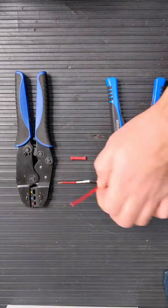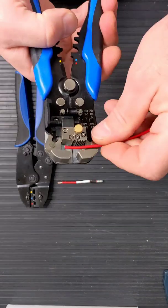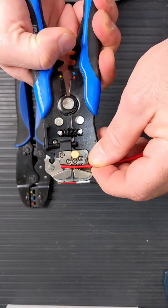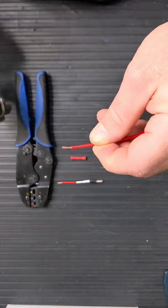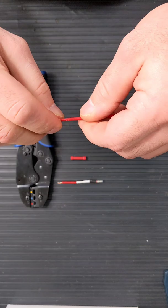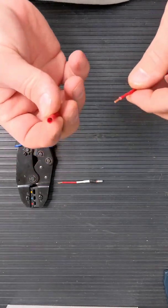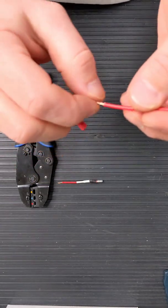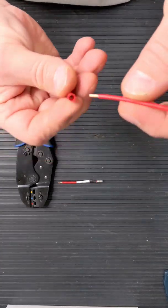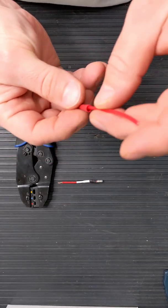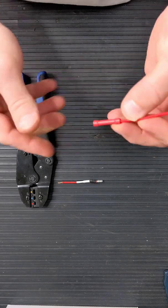You want to use your wire strippers and strip just a centimeter off. Give it a little twist. Make sure you're giving the wires a little twist so you don't have any stray strands. You're going to fit it into the butt connector.